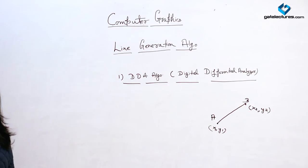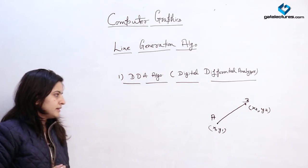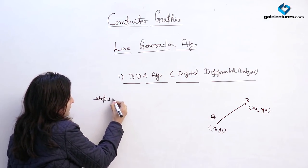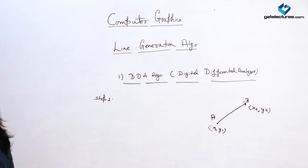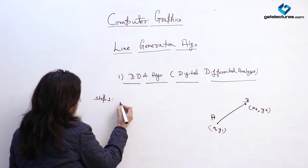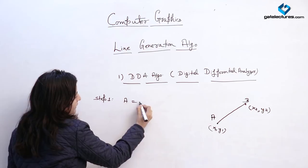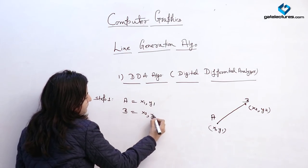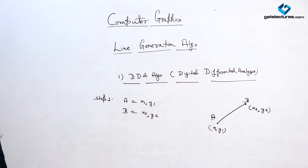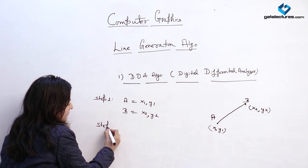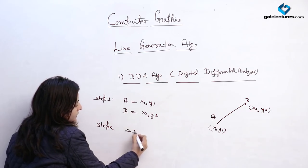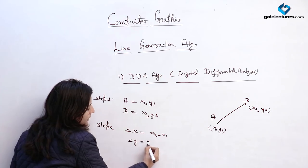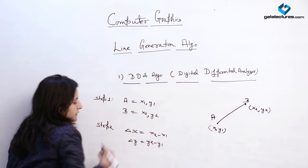We will see the steps to generate a line using DDA. Step one: consider the two endpoints — A which is (x1, y1) and B which is (x2, y2). In step two, we find the difference between them: Δx equals x2 minus x1, and Δy equals y2 minus y1.